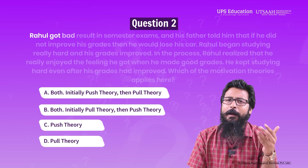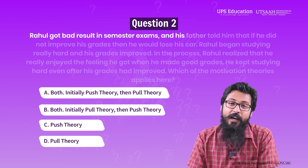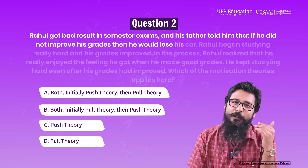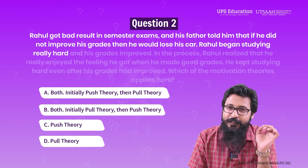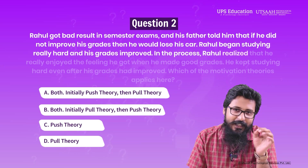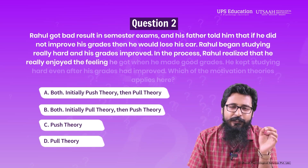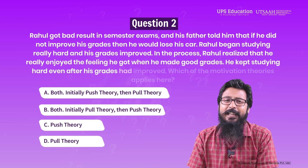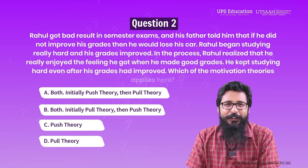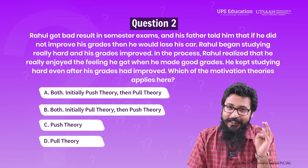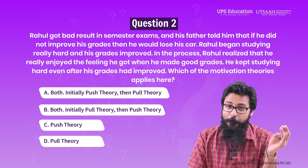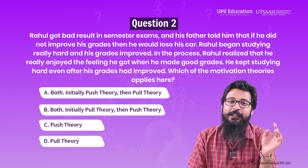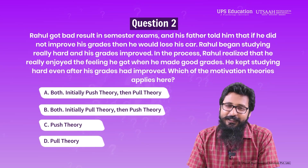Question 2: Rahul got bad results in semester exams and his father told him that if he did not improve his grades, then he would lose his car. Rahul began studying really hard and his grades improved. In the process, Rahul realized that he really enjoyed the feeling when he made good grades. He kept studying hard even after his grades had improved. Which of the motivation theories applies here? Option A: Both — initially push theory, then pull theory. Option B: Both — initially pull theory, then push theory. Option C: Push theory. Option D: Pull theory. The correct answer is A.